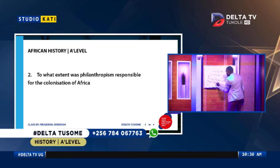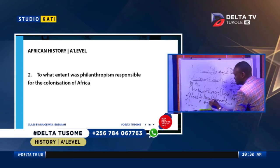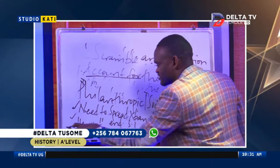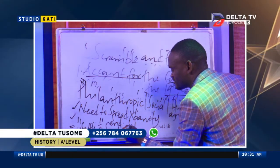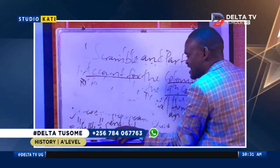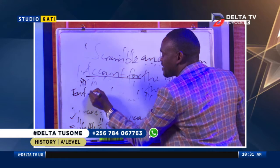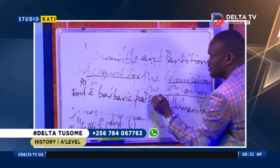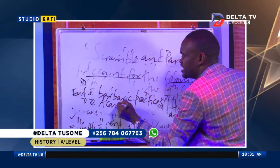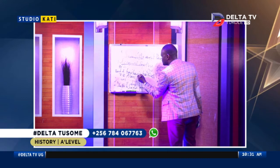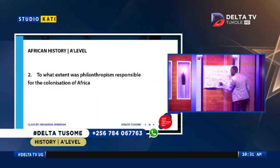Under philanthropic factors, there were quite a number: the need to spread Christianity, the need to end or abolish slave trade, the need to settle the surplus population, and the need to end the barbaric practices of Africans — which included human sacrifice and the murder of twins, prominent among the Igbo and Yoruba people in West Africa.